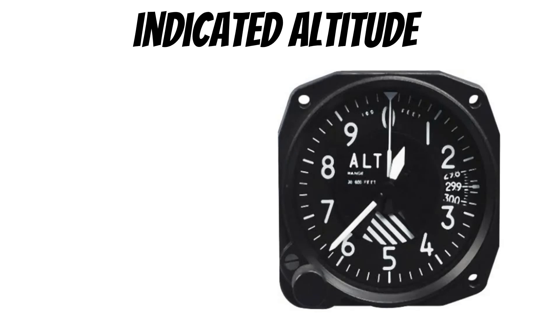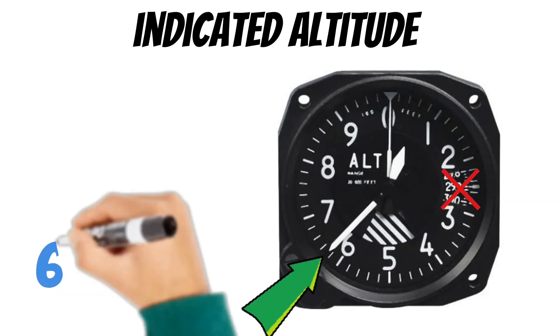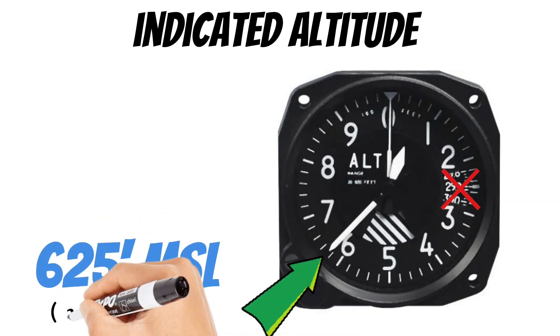Indicated altitude is just like it sounds. It's whatever your altimeter is reading. And this is true regardless of what your altimeter is set at. So the indicated altitude on this altimeter is 625 feet MSL. It's important to note that indicated altitude is not always accurate.